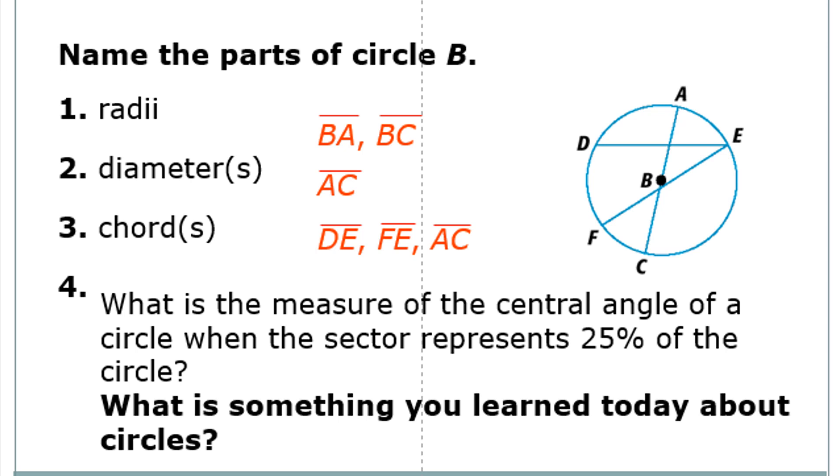For conclusion, we'll have these exercises. Name the radii: we have BA and BC. For diameter, we have only one diameter and that is line segment AC. For the chords, we have DF or DE, and we have FE, and we have AC. These are chords.